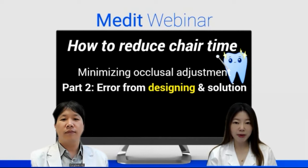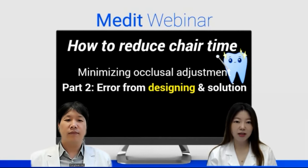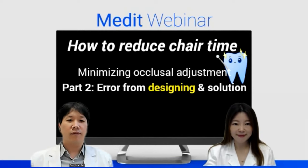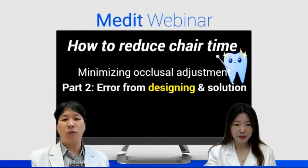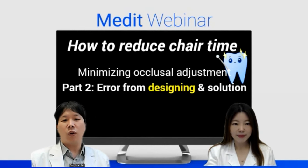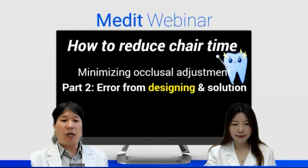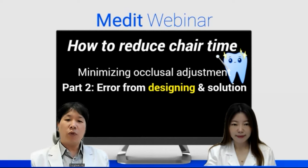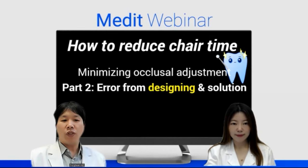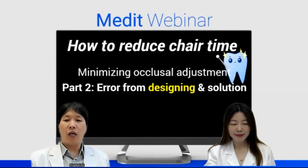Today Dr. Kim came back with the second part of the webinar in a series on minimizing occlusal adjustment, which consists of five parts. I hope everyone enjoyed the first part. In the previous webinar, it was all about scanning — full-arch versus half-arch scanning to compare data accuracy, and experiments to find the best way to scan abutments among six methods, plus checklists before finalizing a scan. You can find those on MEDIT's YouTube channel.